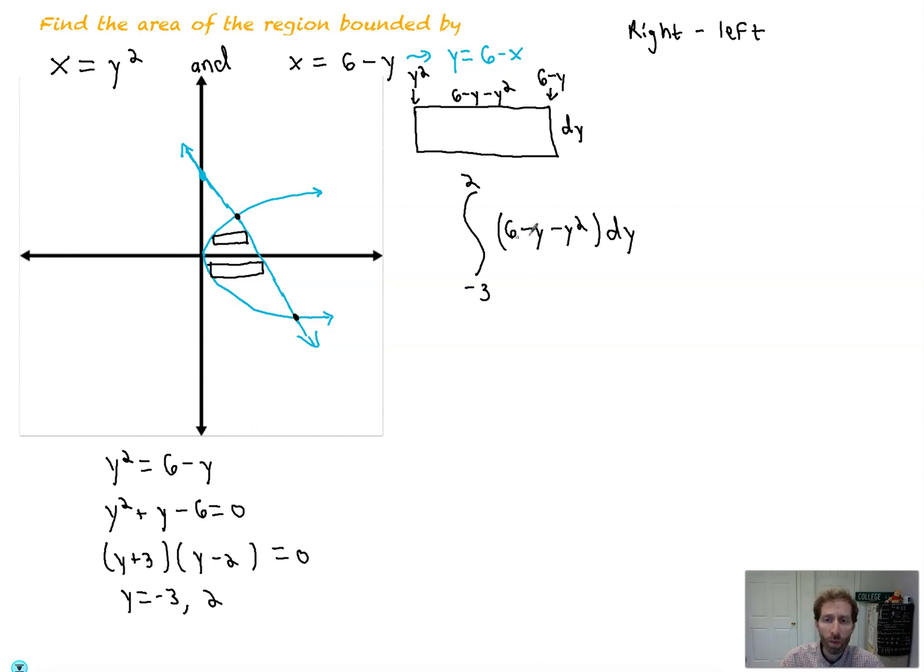Now as far as evaluating it goes, not so bad. What we do is integrate like normal. So the integral of 6y, or 6 is 6y, we get minus 1 half y squared, or y squared over 2, and then minus 1 third y cubed, or y cubed over 3, however you want to look at it.